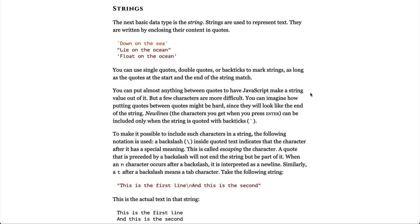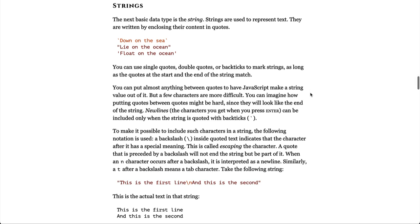Strings. The next basic data type is the string. Strings are used to represent text. They're written by enclosing their content in quotes. You can use single quotes, double quotes, or backticks to mark strings as long as the quotes at the start and the end of the string match. You can put almost anything between quotes to have JavaScript make a new string value of it, but a few characters are more difficult. You can imagine how putting quotes between quotes might be hard since they will look like the end of the string. New lines, the characters you get when you press enter, can be included only when the string is enclosed with backticks.